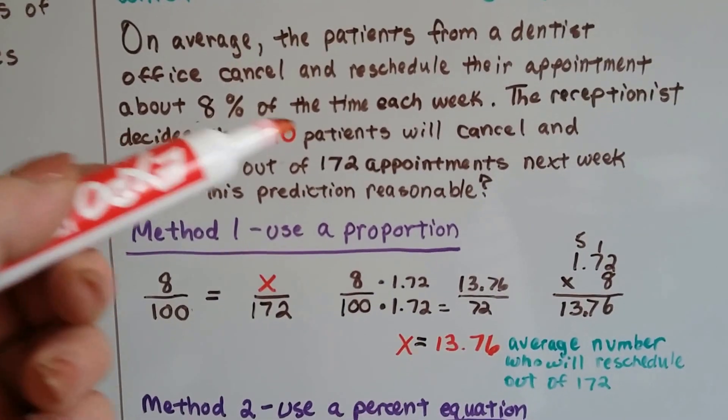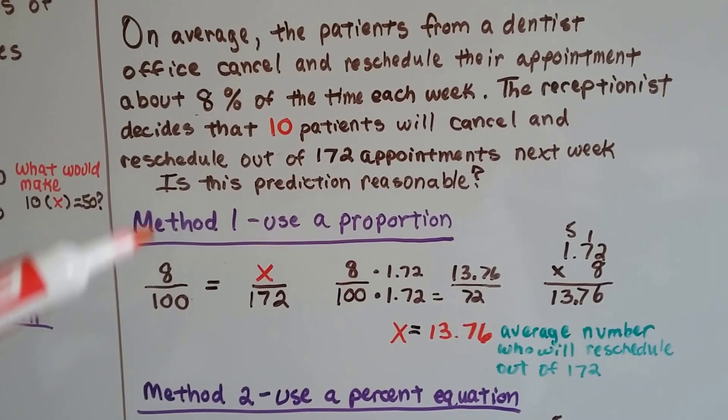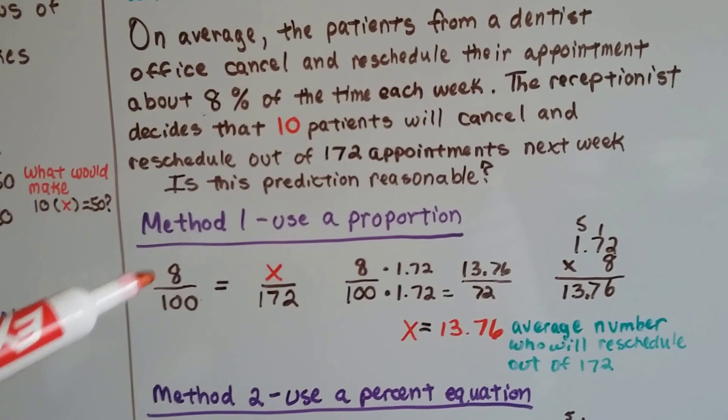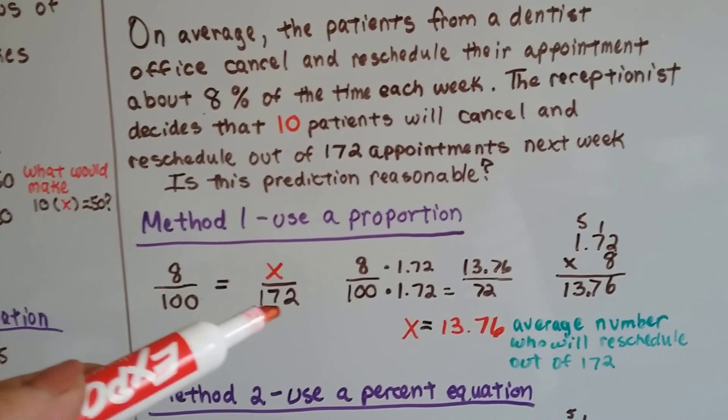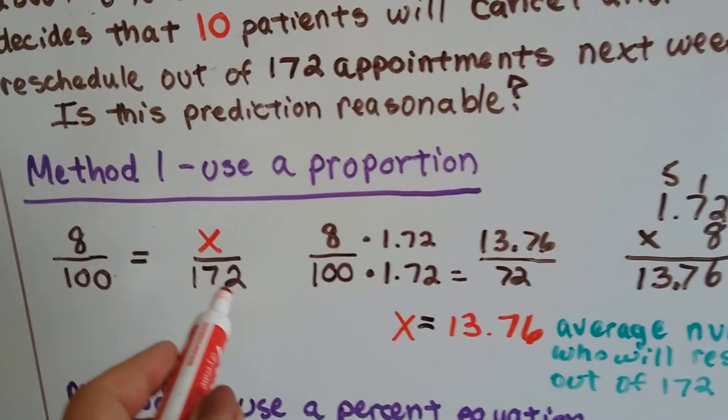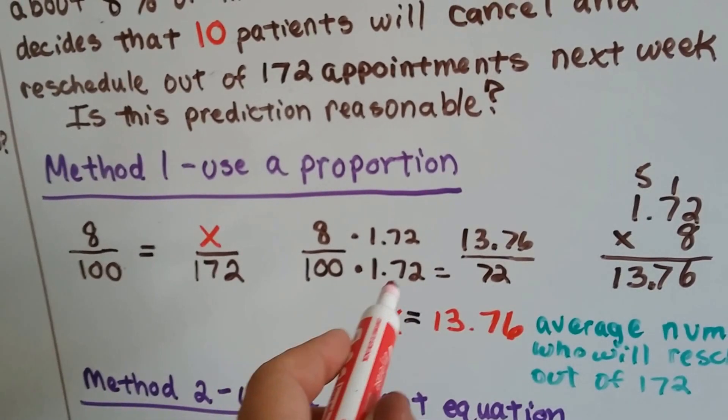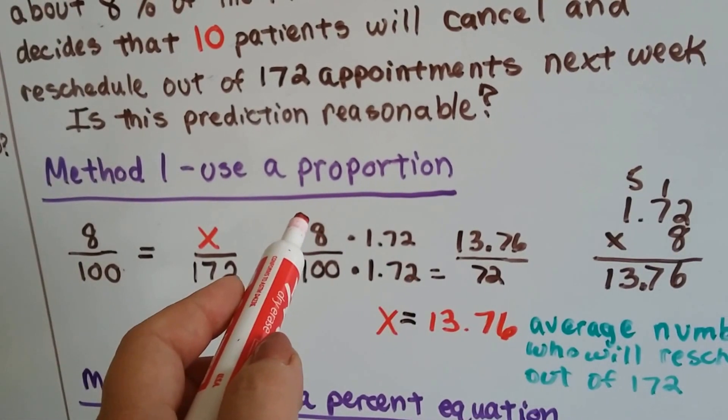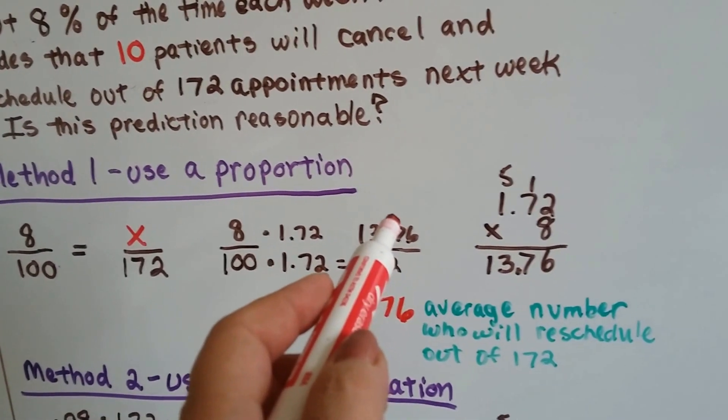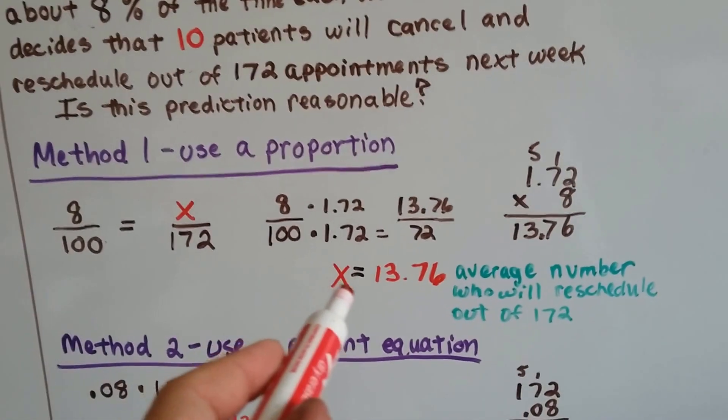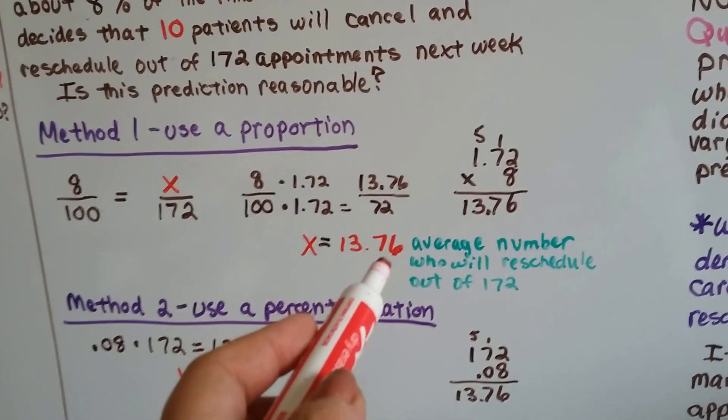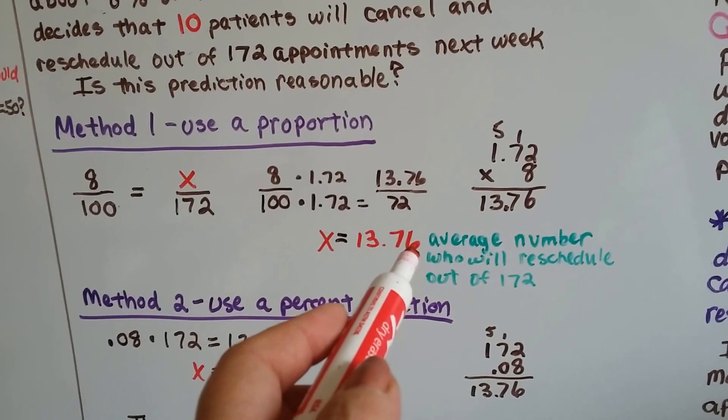Did she make a reasonable prediction based on the percentage? Well, 8% is 8 out of 100, 8 one hundredths. So 8 over 100 is equal to x over 172. So what does the 100 need to be 172? It needs to be multiplied by 1.72. So we multiply the 8 numerator by 1.72 and get 13.76. So that means x is equal to about 13.76, which would be the average number that will reschedule out of the 172.